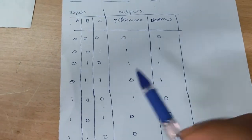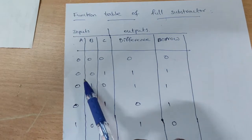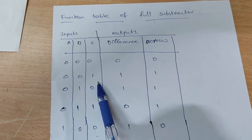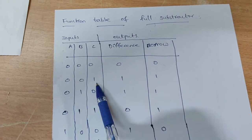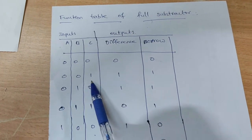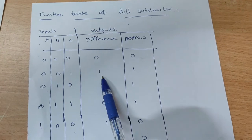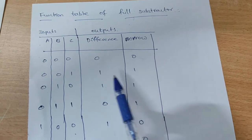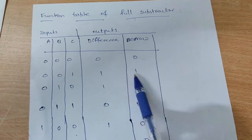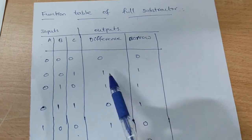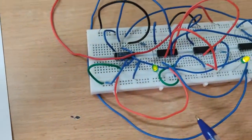Next combination: A=0, B=0, C=1. For this combination the outputs are difference=1 and borrow=1. Both outputs are 1, 1.